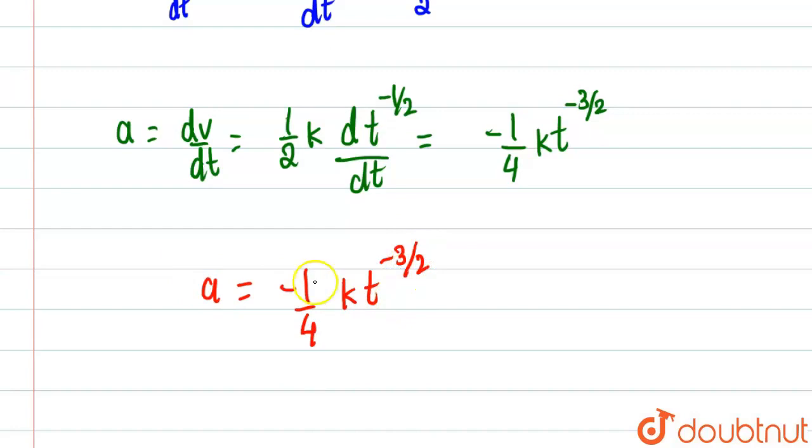So we need to find the proportionality. So if you see properly, this is a constant quantity. This is an absolute constant.